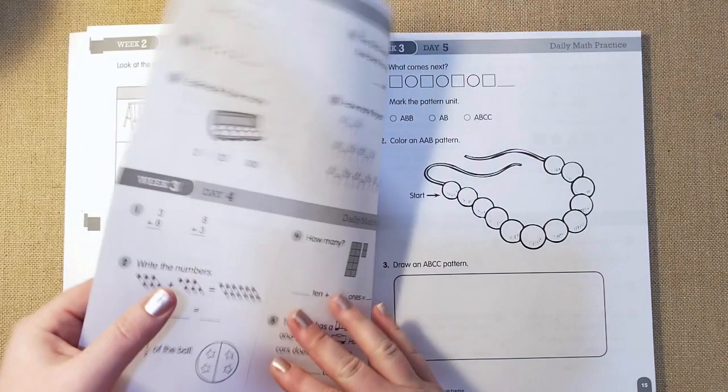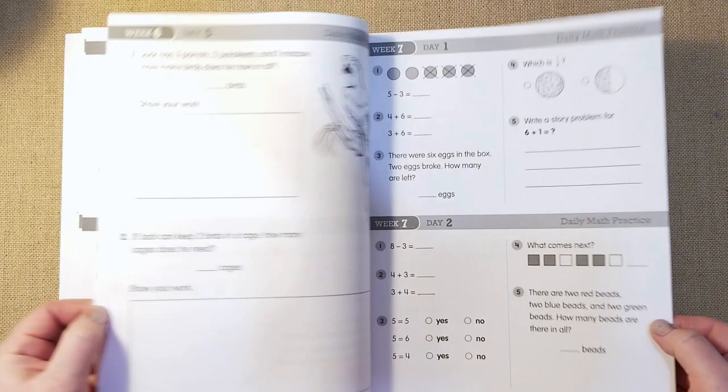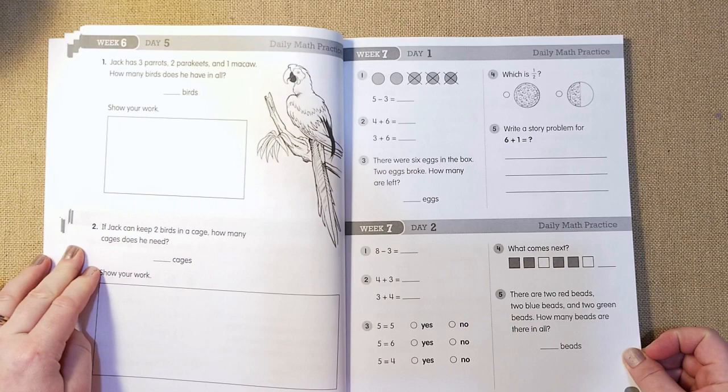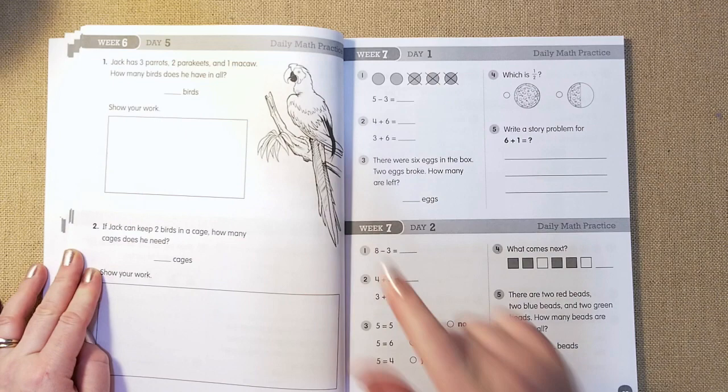And then that is week two. So I will kind of skip to, let me skip to like week seven for you guys so you can see kind of like how it progresses. Week seven, day one, five minus three, they show you visually. And then four plus six. So they're doing addition. Another word problem, which I like.